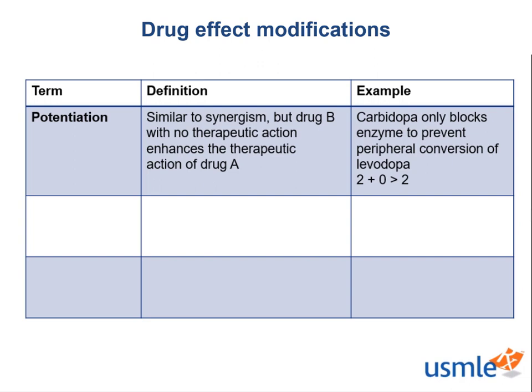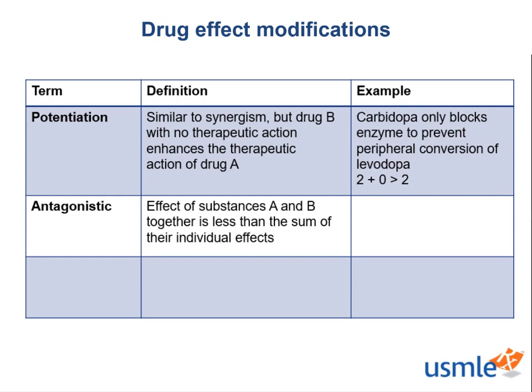Next, let's discuss the term antagonistic, which is defined as when the effect of substances A and B together is less than the sum of their individual effects, expressed mathematically as 2 plus 2 is less than 4. When you think of one drug that lessens another's effect, it brings to mind an antidote — like ethanol as an antidote for methanol toxicity.